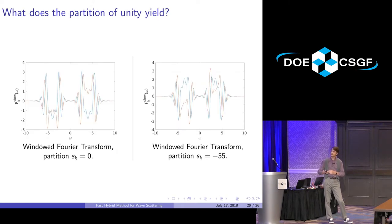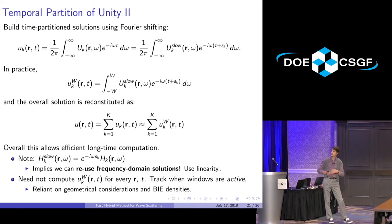This is after you do the time partitioning. These are the Fourier transforms—they're much smoother, so they require fewer frequency domain solutions. You just reconstitute the solution using each time partition, and then you're home free.